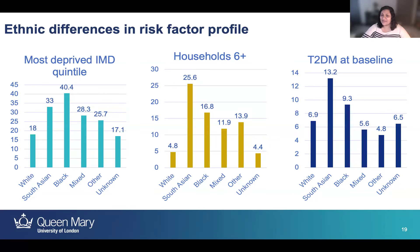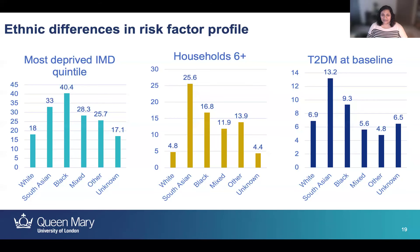Looking at ethnic differences in the prevalence of type 2 diabetes at baseline: as expected, the prevalence was twice as high in South Asian compared to white populations, and raised significantly in black and other minority ethnic groups.